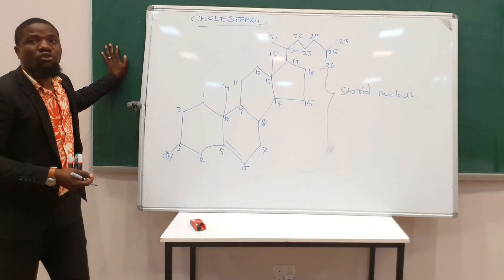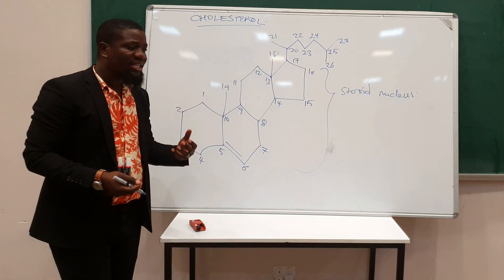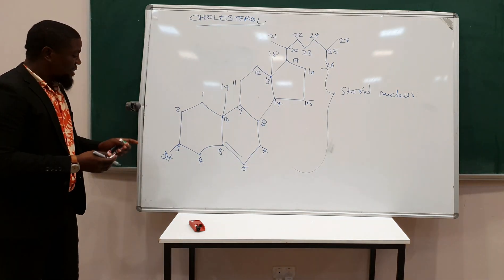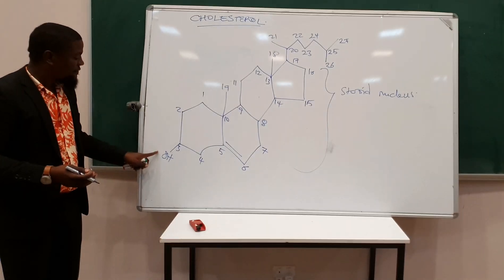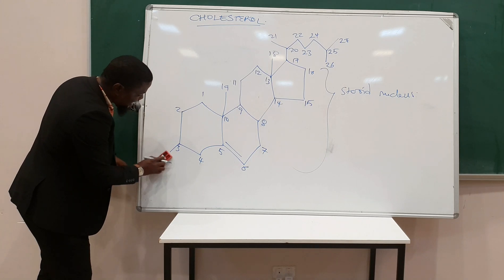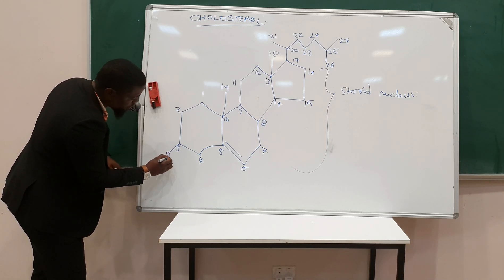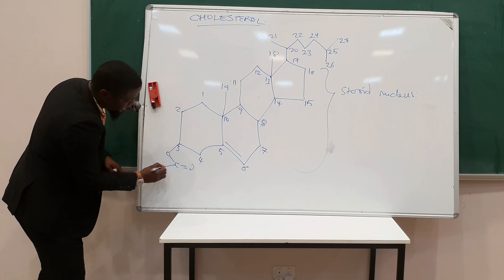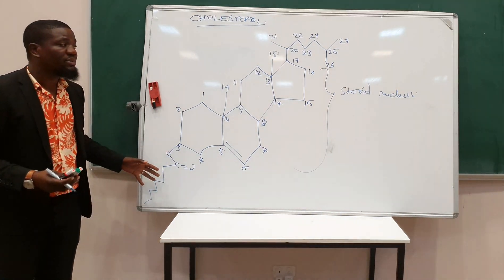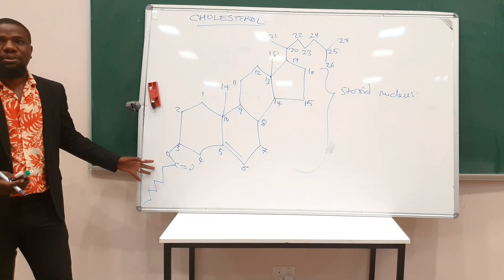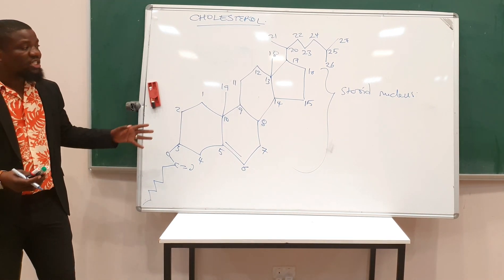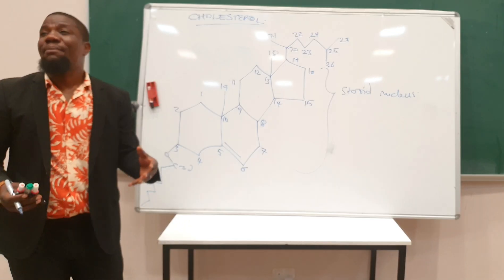Cholesterol would exist in an esterified form, where a long-chain fatty acid is attached to carbon number 3 instead of a hydroxyl group, forming a cholesterol ester, which is even more hydrophobic. However, mostly cholesterol would exist in a free form as part of lipoproteins.